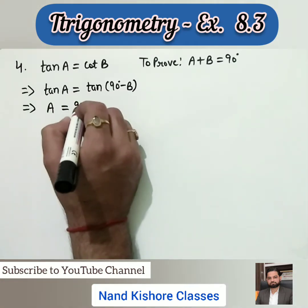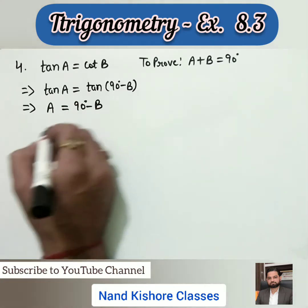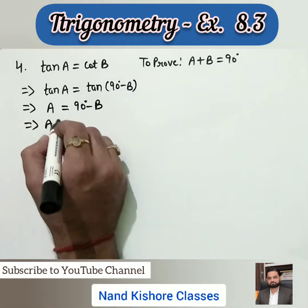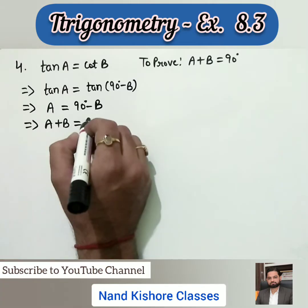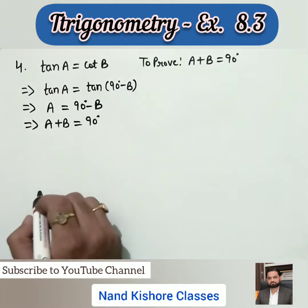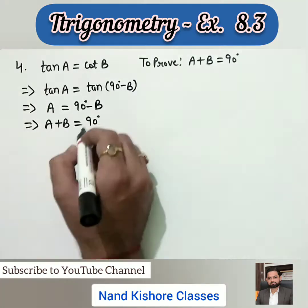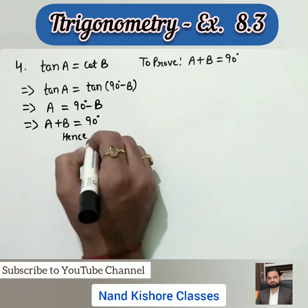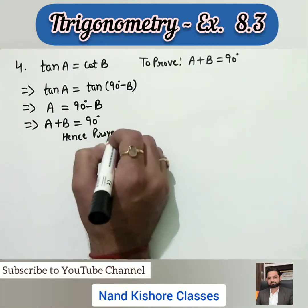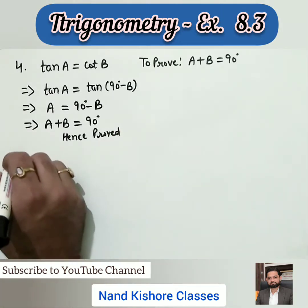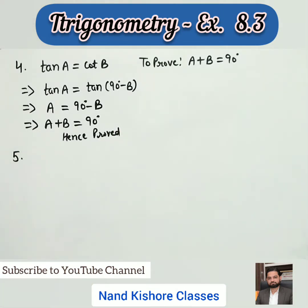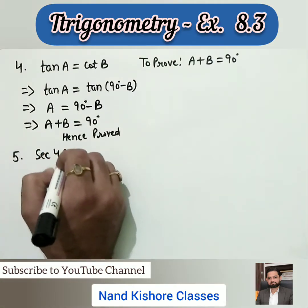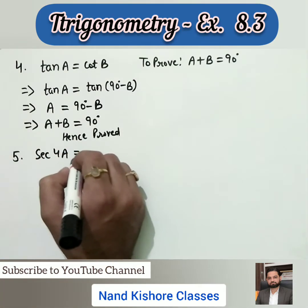Since both sides have tangents, the angles must be equal: a = 90° - b. Bringing -b to the left side, we get a + b = 90°, which is what we wanted to prove. Hence proved. This question was very easy. Let's come to question number five.